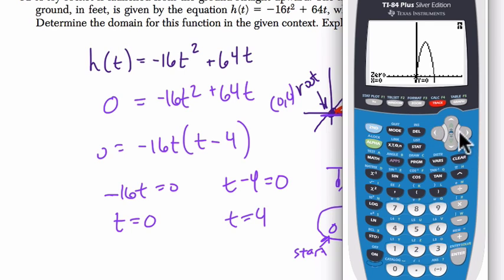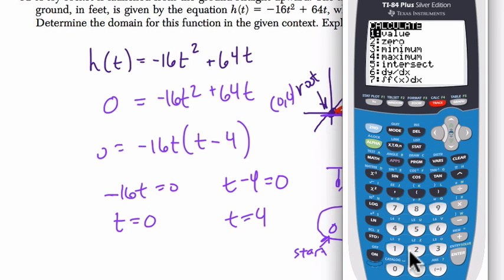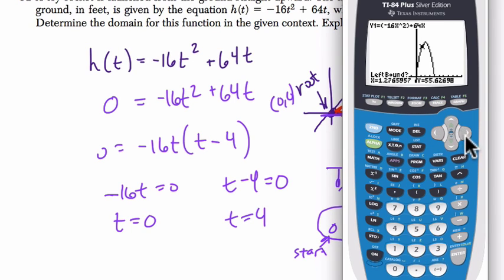Then the second one, second trace, I go to zero again. And now I pick a point to the left and a point to the right of our second root over here. Make the calculator do the work for us. Hit enter to the left of it, enter to the right of it, hit enter again. And I get my second root of (4,0).